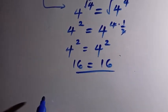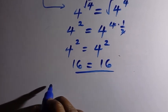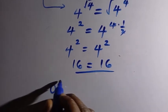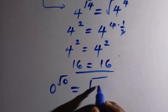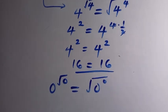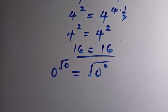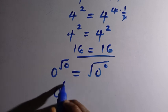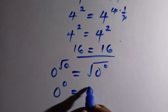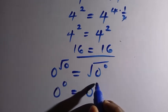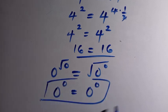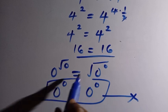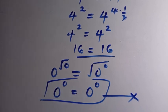For the last candidate, a equals 0: substituting gives 0 raised to the power of square root of 0 on the left, and the square root of 0 raised to the power of 0 on the right, both reducing to 0 raised to the power of 0. Since 0 to the power of 0 is indeterminate and has no valid basis, we reject a equals 0.